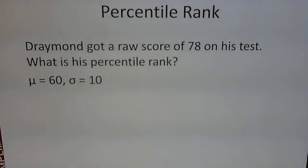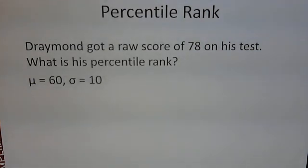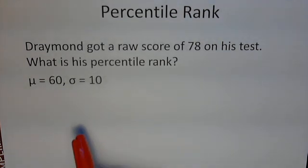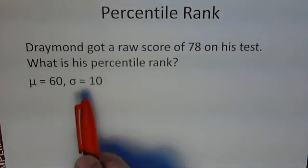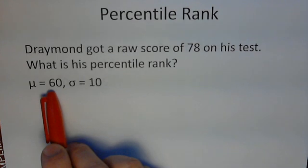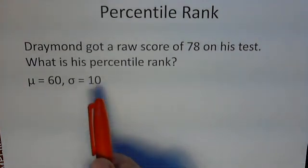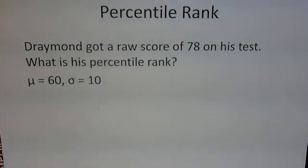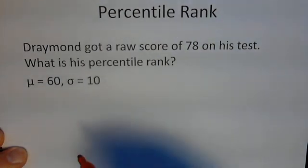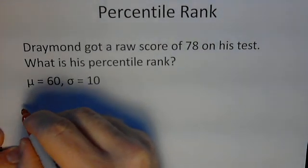We have Draymond here who got a raw score of 78 on his test and we want to figure out what his percentile rank is. What we need for that is the mean for the test — the overall mean, the population mean — and the population standard deviation. We've got that, so we can quickly figure out what his percentile rank is.